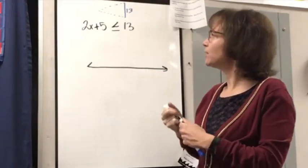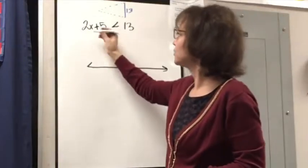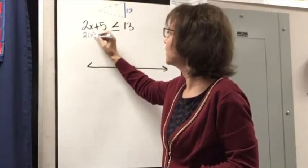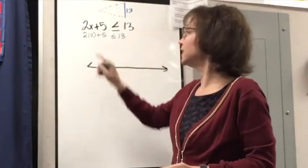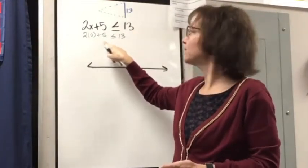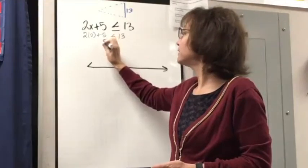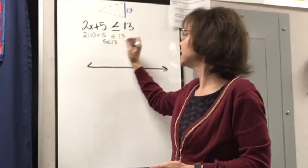So I know if I substitute a 0 in for here, that will make this true, right? 2 times 0 plus 5, is that going to be less than or equal to 13? Well, 2 times 0 is just 0, and then plus 5. So 5 is less than or equal to 13.